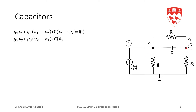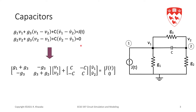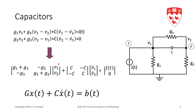KCL at node 2 is the current in resistor G2, which is G2·V2; the current in resistor G3, which is G3·(V2 − V1); and the current in the capacitor, which is C·(V2-dot − V1-dot). So we have two unknowns and two equations — we are done.